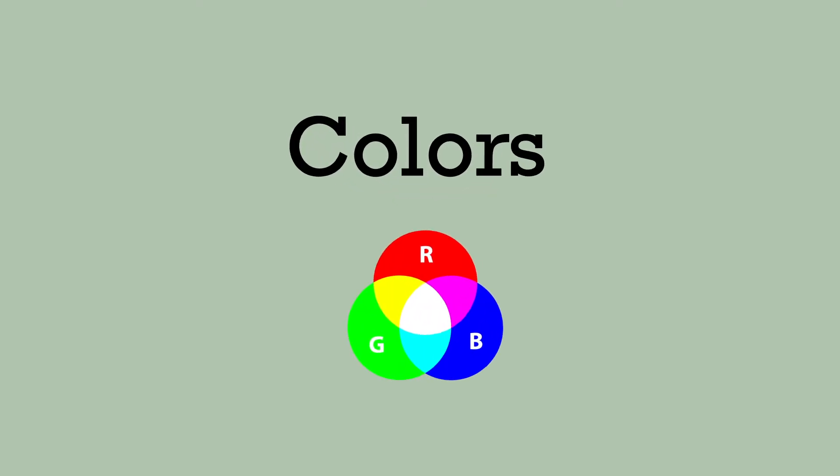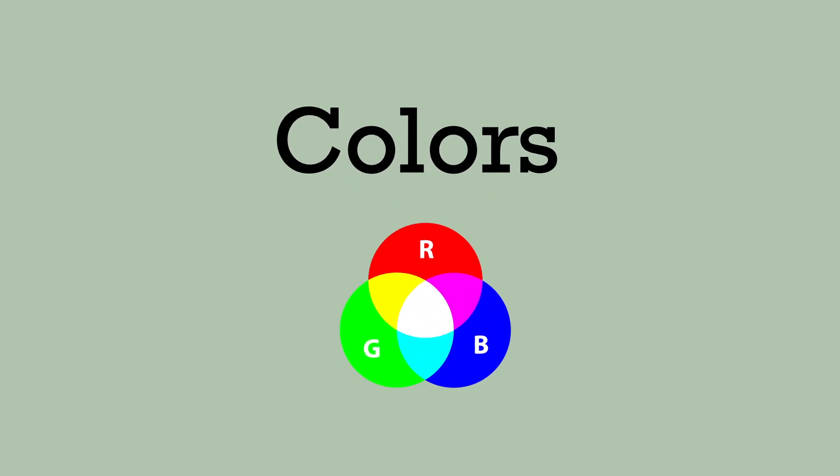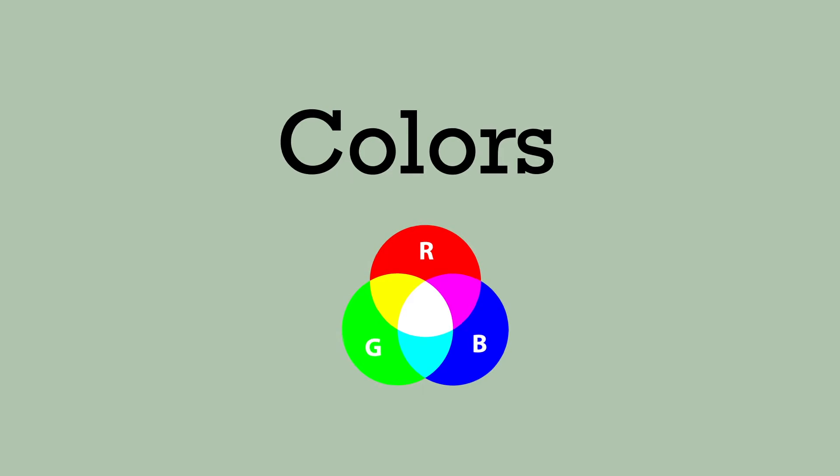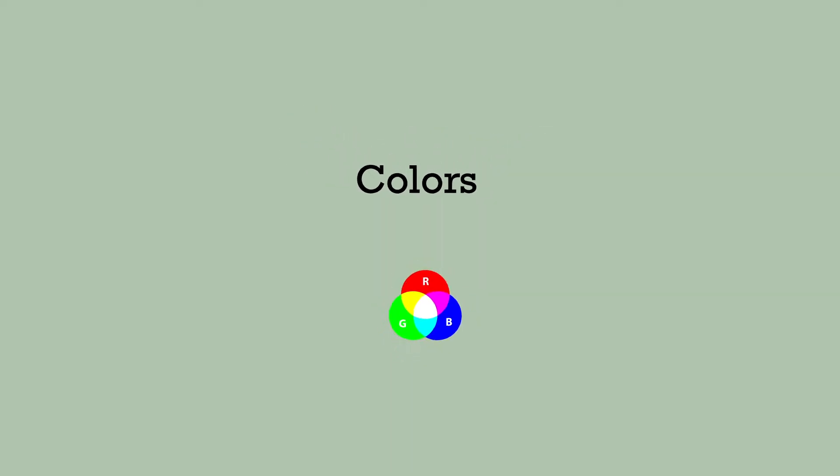Colors play a big role in the look of your web pages. There are different ways that color values can be used in CSS. Color names, hexadecimal codes, and RGB values are three.